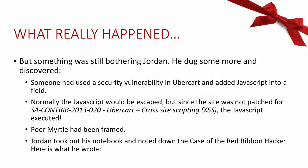Jordan dug some more and discovered that someone had used a security vulnerability in Ubercart and added JavaScript into a field. Normally when an untrusted entity puts JavaScript into a field, Ubercart comes up and escapes it — it basically says we're not going to process that JavaScript. But because of a vulnerability in Ubercart, it wasn't patched. So when the attacker put their JavaScript in, it executed and changed the payment gateway URL.